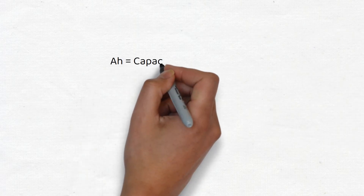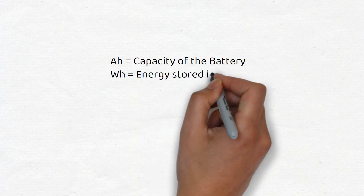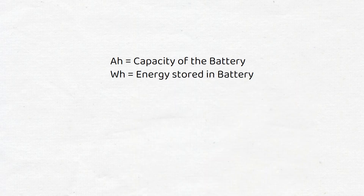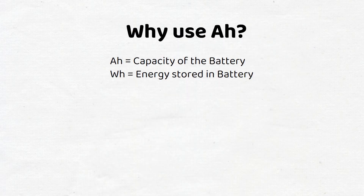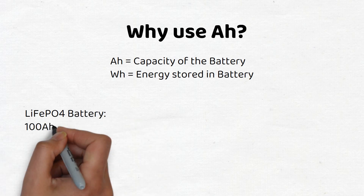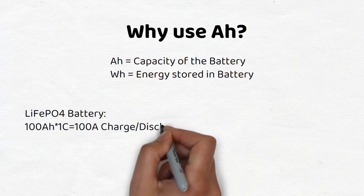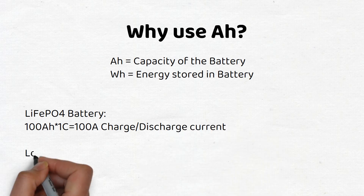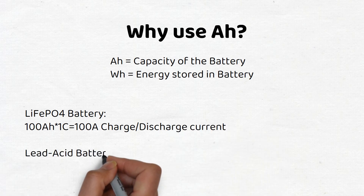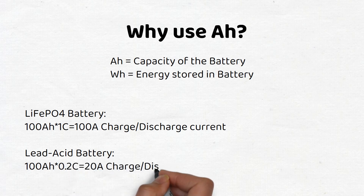In essence, amp hours gives insight into a battery's capacity, while watt hours reveal the total energy it can store. Amp hours should be used to calculate the energy and discharge rate of a battery, also called C-rate. The C-rate of a lithium battery is 1C, while it is 0.2C for a lead acid battery.